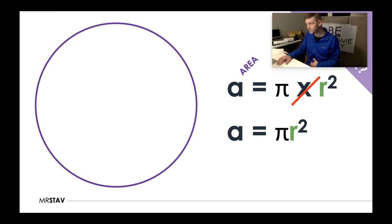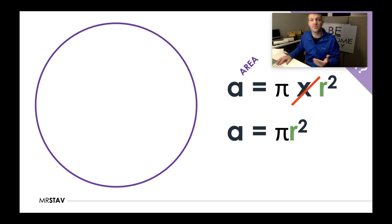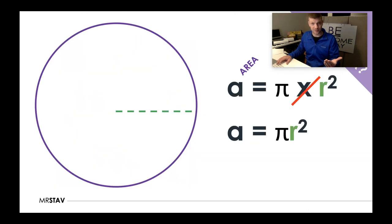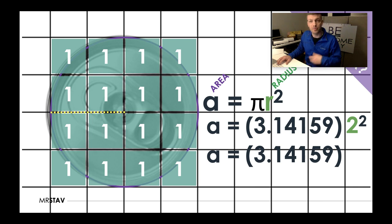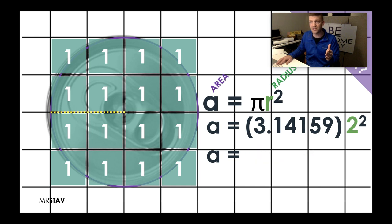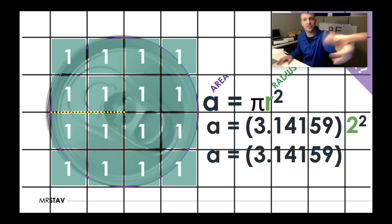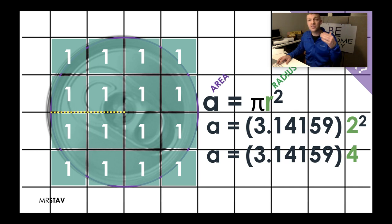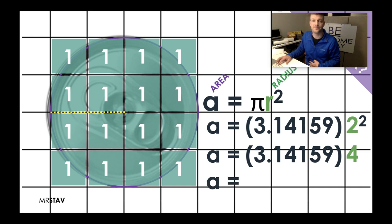Write this down to remind yourself. Finding the area of a circle: the formula is pi r squared. Pi is always 3.14159. The radius is half the distance across the circle. Two to the power of two is two squared. We follow BEDMAS and get 12.56 square units.